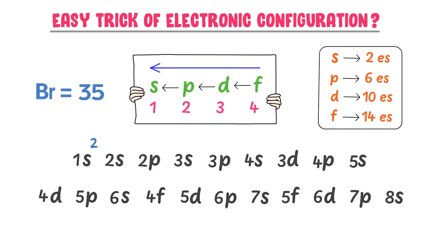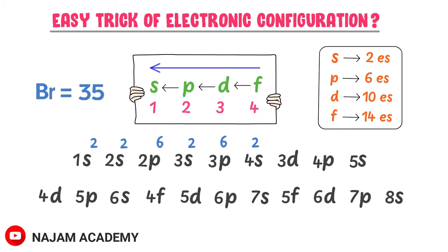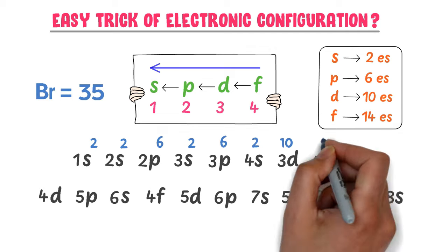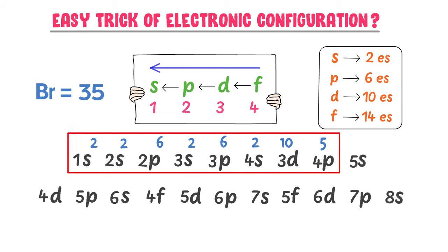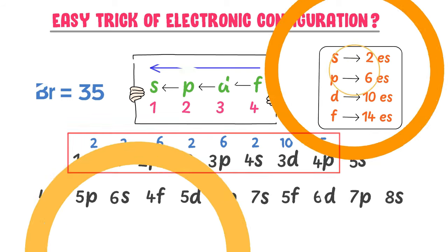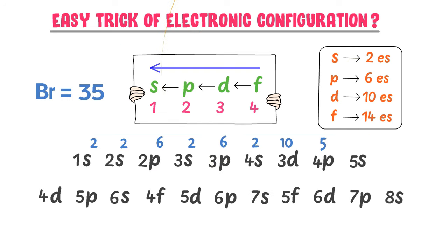1S: 2 electrons. 2S: 2 electrons. 2P: 6 electrons. 3S: 2 electrons. 3P: 6 electrons. 4S: 2 electrons. 3D: 10 electrons. 4P: 5 electrons. This is the SPDF electronic configuration of bromine. The last electrons of bromine are present in the P orbital, so it is also called a P block element.